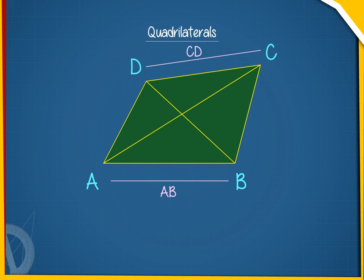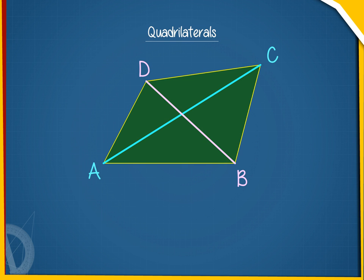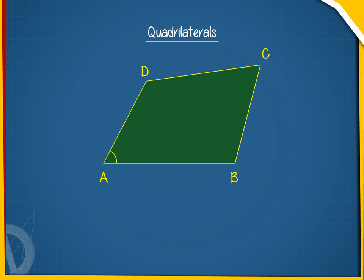ABCD and ADBC are two pairs of opposite sides. AC and BD are its diagonals. Angle A, Angle B, Angle C and Angle D are its four angles. Angle A, Angle C and Angle B, Angle D are two pairs of opposite angles.